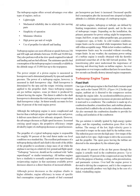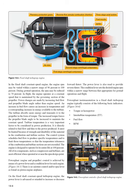Only about 10% of the air passing through the engine is actually used in the combustion process. Up to approximately 20% of the compressed air may be bled off for heating, cooling, cabin pressurization, and pneumatic systems. Over half the engine power is devoted to driving the compressor, which can potentially produce very high drag in the case of a failed, windmilling engine. In the fixed shaft constant speed engine, engine RPM may be varied within a narrow range of 96% to 100%, or reduced to 70% during ground operation. In flight, the engine operates at a constant speed maintained by the governing section of the propeller. Power changes are made by increasing fuel flow and propeller blade angle rather than engine speed.